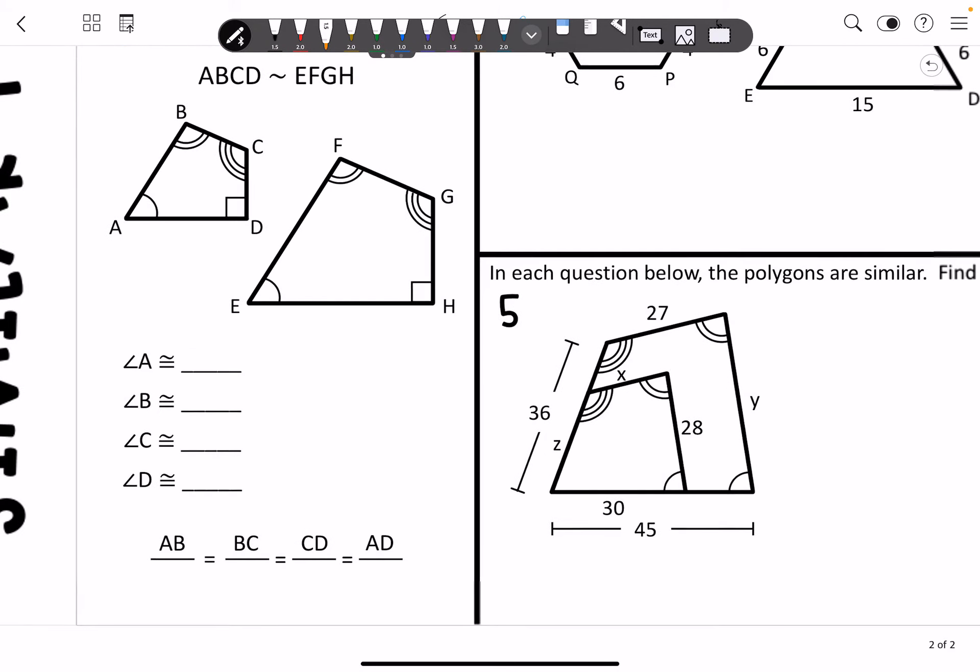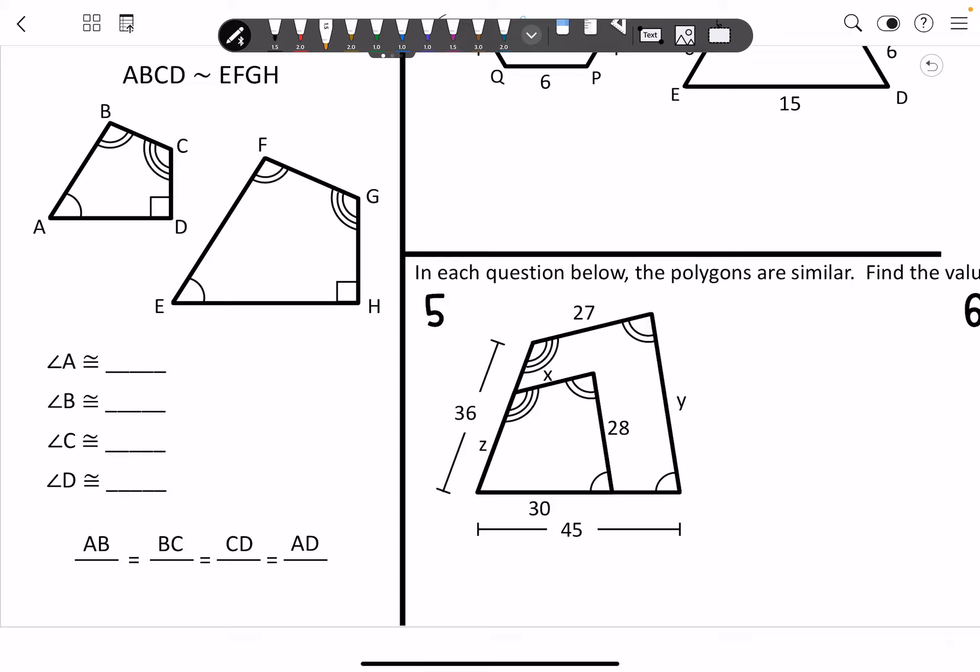Alright, so if I were to tell you that ABCD is similar to EFGH, then that means that I can write similarity statements just like I could write congruency statements. Now, I'm going to use colors to help me out.